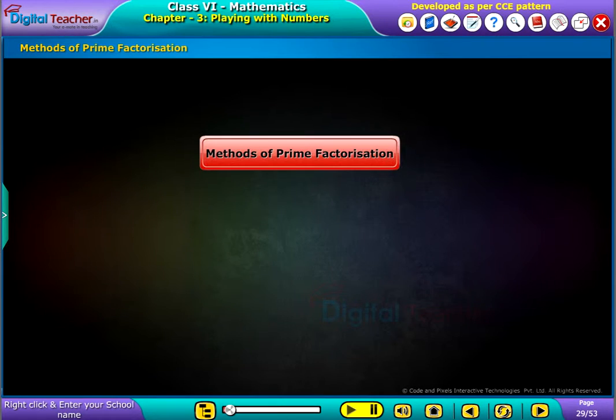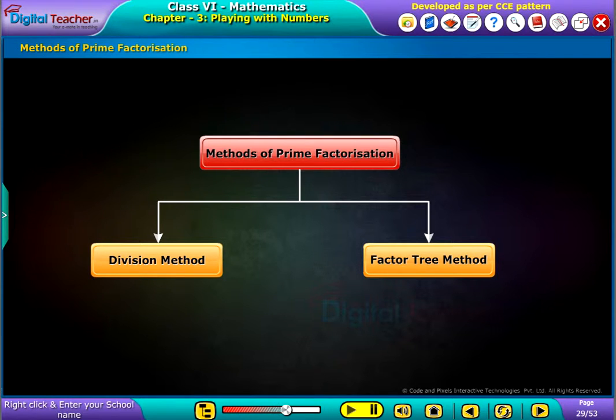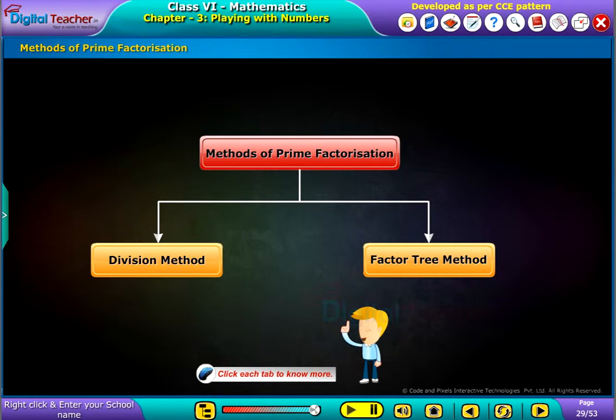Welcome to the chapter. There are two methods of finding prime factorization of a number: one is the division method and the second one is the factor tree method. Click each tab to know more.